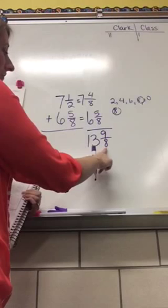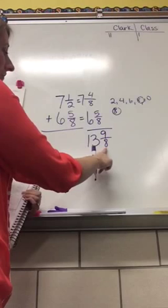When I look at this fraction, I can see that I have enough to make a whole new group. So this is going to change. It takes 8 to make a whole and I have 9. So I can make one more whole. So now I have 14 whole and then there's one left after I moved those 8 over. So my answer is 14 and 1 eighth.